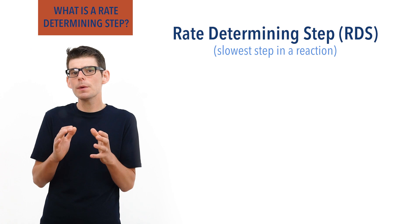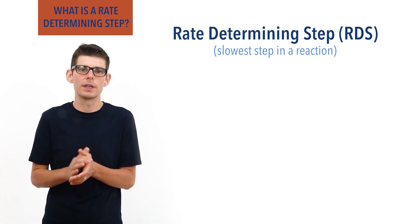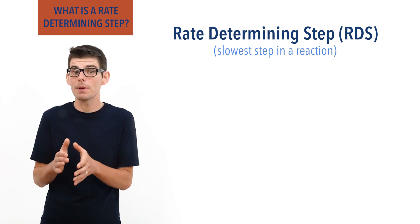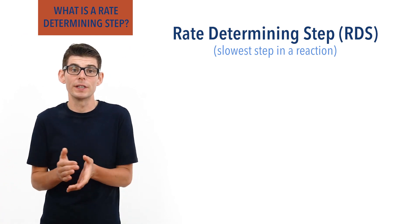The reason the slowest step occurring in a reaction is important is that it is the slowest step that determines the overall rate of a reaction.